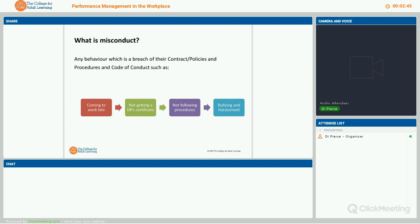Poor performance can often get mixed up with poor conduct. Poor conduct, or what we call misconduct, is any behaviour which is actually a breach of their contract, your policies and procedures, and your code of conduct — such as coming to work late, not getting a doctor's certificate after two days off in a row, not following policies and procedures, or bullying and harassment.